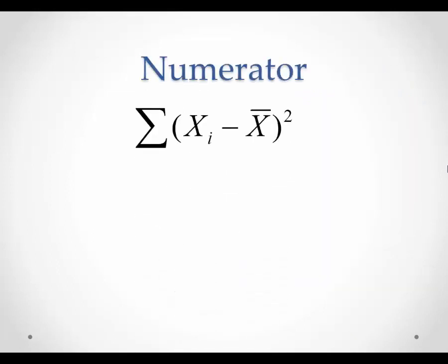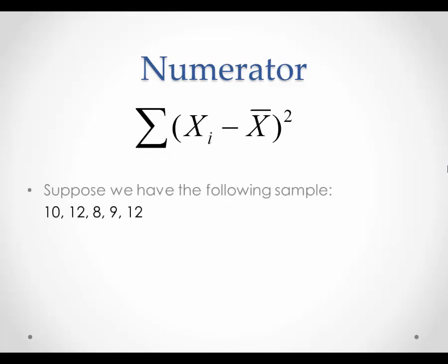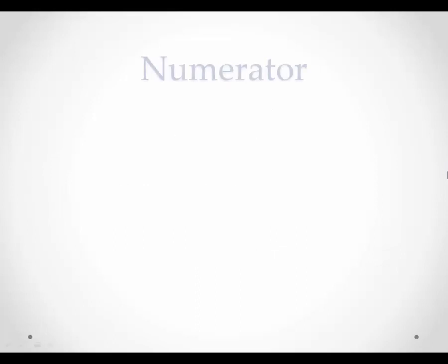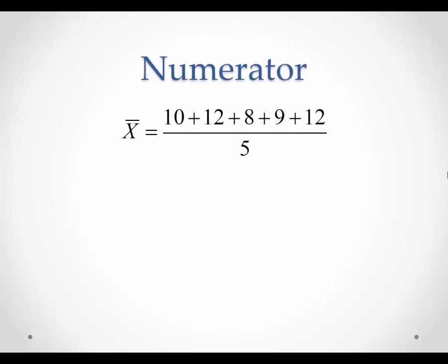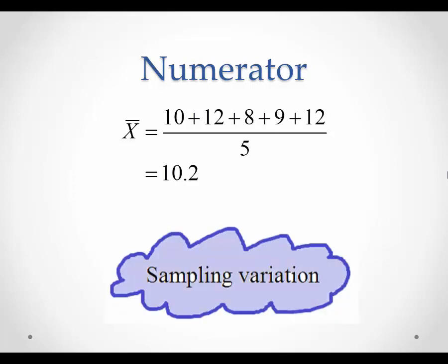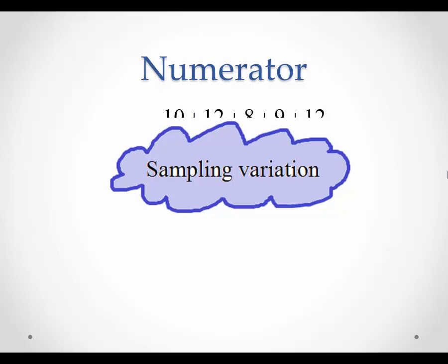Let's look at the numerator of the sample variance formula. Suppose we have the following sample: 10, 12, 8, 9, and 12. Let's also suppose that we know the population mean, and that it's equal to 10. Calculating the sample mean, we get 10.2. If the population mean is 10, why is the sample mean not equal to 10? Well, this is because of sampling variation — the sample is not perfectly equal to the population. It's simply a subset of random observations from the population, so we're bound to get some sampling variation or randomness.